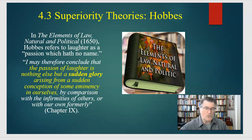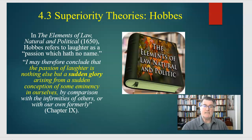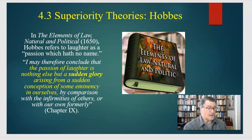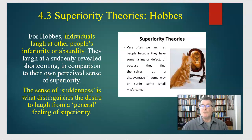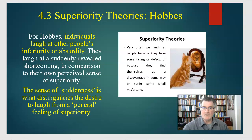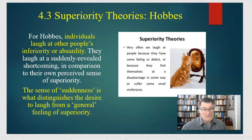We're laughing at. When Hobbes says deformities and defects, he means not an actual physical handicap but a deformity of character. He says we should be moving in the opposite direction — compare ourselves only with the most able, look to people that are good, and we end up being better individuals. So in terms of a clear definition of superiority theory, we're laughing at other people's deformities of character. Individuals laugh at other people's inferiority or absurdities, at some suddenly revealed shortcoming — and it can be in ourselves too.